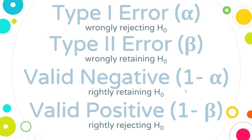We want at least 80% power. Power is another term for valid positive — to be able to rightly reject the null, we want to be able to do that 80% of the time. So when I pull over someone who's really drunk, I want to be able to identify that they're drunk and arrest them 80% of the time. We often set these thresholds such that if 1 minus beta is 0.8, then beta is 0.2, and if alpha is 0.05, then 1 minus alpha is 0.95.